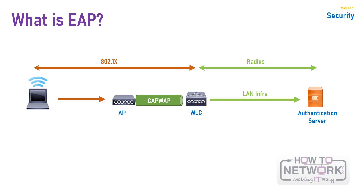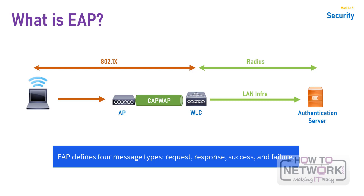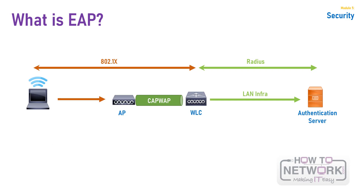EAP separates the authentication itself from the authentication process. As such, you can use EAP with almost any type of authentication, and several layers of consecutive authentications can occur within the same EAP framework. EAP defines four message types: request, response, success, and failure. Any side in the authentication process can start, although the AP or WLC usually starts the process by sending an identity request message. Because of this flexibility, several mechanisms are defined to allow client authentication — some authenticate the client, some authenticate both the server and the client, and other mechanisms authenticate the device, the user, or both. Depending on the level of security needed, you can implement the chosen mechanism as long as it supports EAP.